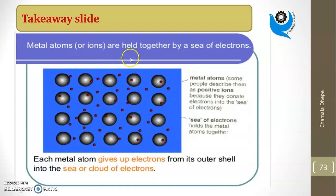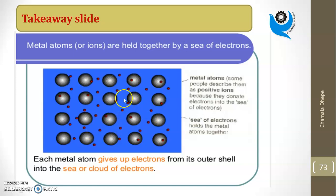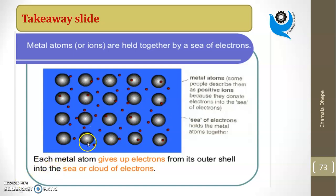Always remember: metal atoms are held together by the sea of electrons. The sea of electrons means the metal ions have positive charges and the valence electrons have negative charges — there are a large number of electrons, like a sea or ocean. The attraction between this positive core and these negative electrons forms the metallic bond. The remaining properties of the metallic bond will be covered in the next video. Thank you.